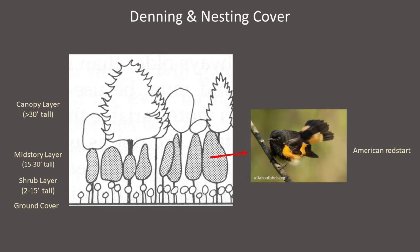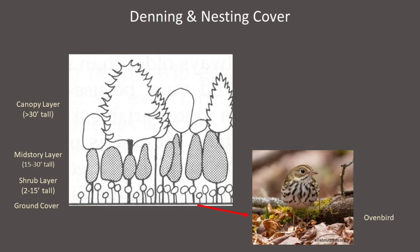American redstarts nest in the cover of deciduous foliage within the mid-story layer and are usually absent from forests lacking trees 15 to 30 feet tall. Ovenbirds nest directly on the ground within the cover of fallen deciduous leaves, and they are often absent from softwood forests or any forests that lack the thick leaf litter they prefer as cover for nesting.